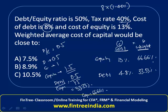Now we multiply cost by weight and add them up. For equity: 13 × 0.6666 = 8.66%. For debt: 4.8 × 0.3333 = 1.59%. Adding the two gives a total of 10.26%. The closest option is C, and therefore C is the answer.